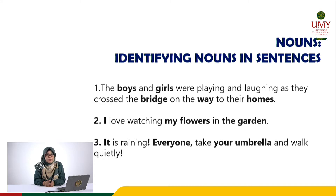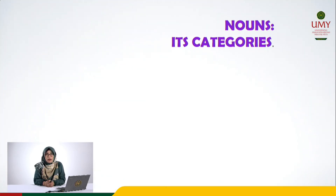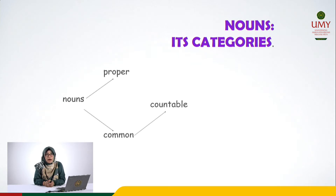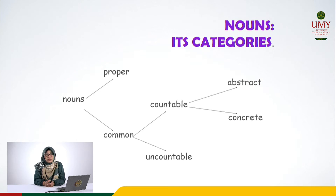From the examples, we can see that there are several categories of nouns. Now we are going to talk about the categories of nouns. The categories of nouns can be seen in this diagram. There are two big categories: proper and common nouns. The common noun is further divided into countable and uncountable, and these can also be divided into abstract nouns and concrete nouns. Let us discuss these categories one by one, starting with proper nouns.